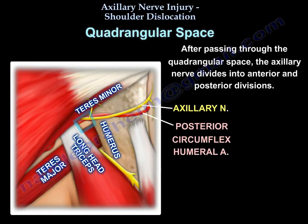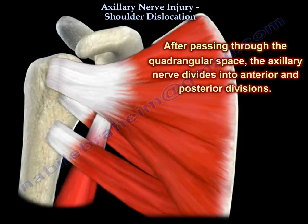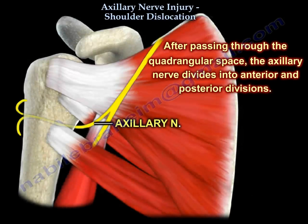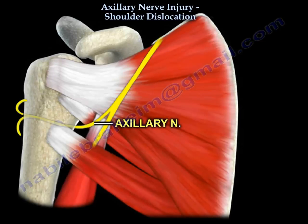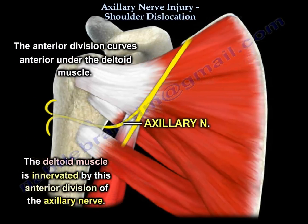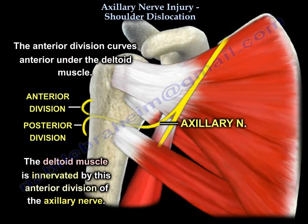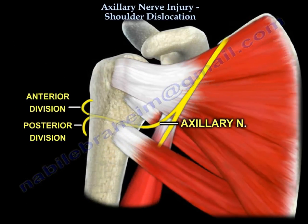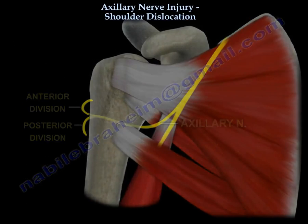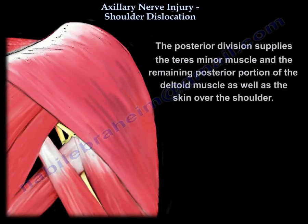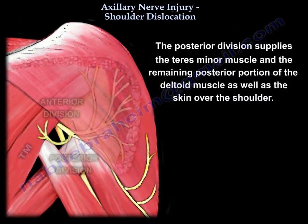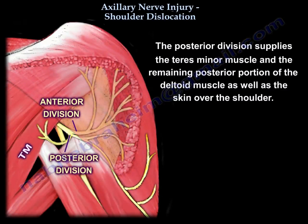The axillary nerve has two branches: an anterior one which supplies the anterior and middle part of the deltoid, and a posterior branch which supplies the teres minor and the posterior part of the deltoid.